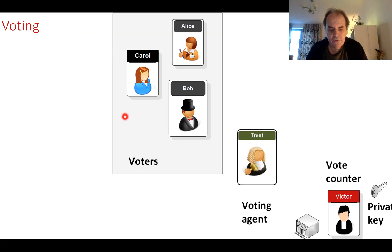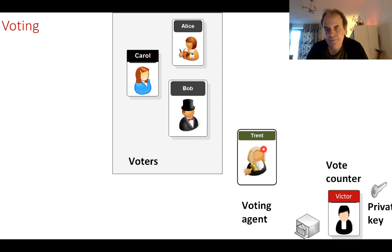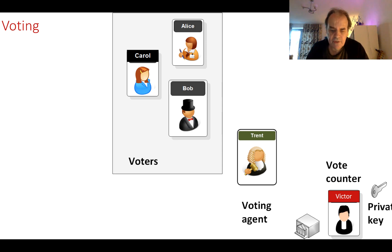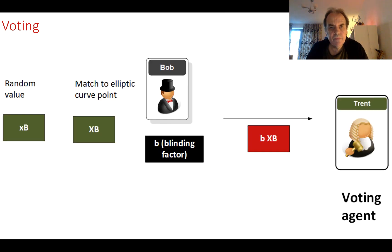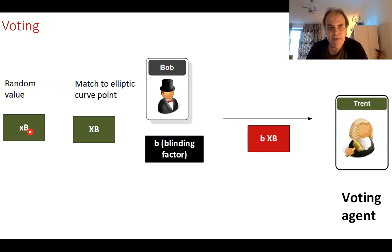Let's say we have a voting system with Bob, Alice, and Carol. We have a trusted voting agent — Trent — who will register Bob, Alice, and Carol and send these on to our vote counter, Victor. Initially, we create a private key for Victor that will be used to authenticate the votes as they come in. Bob creates his random value, called little x_b, and maps that onto an elliptic curve as big X_b.